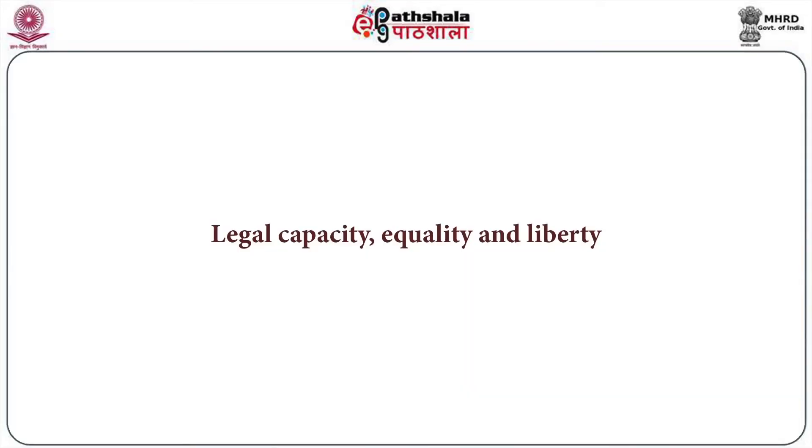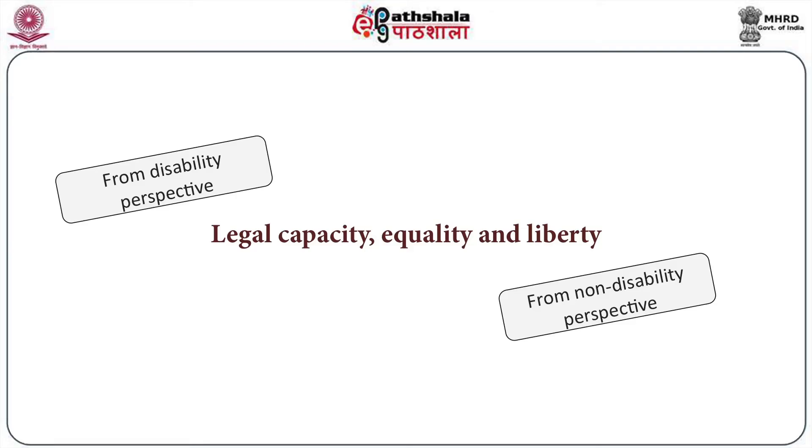Having discussed humanness, we move to other crucial legal concepts — legal capacity, equality, and liberty — from a non-disability and then from a disability perspective. The denial of legal capacity has primarily been effected on persons with intellectual and psychosocial disabilities. We think that those without intellectual or psychosocial disabilities are normal and therefore enjoy legal capacity, while those who have such disabilities are deemed abnormal and denied capacity. This denial occurs through three different kinds of formula.